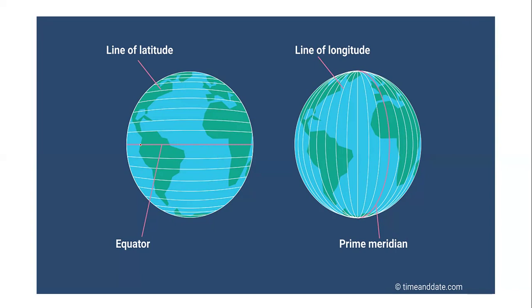So, equator is a great circle. Why? Because it divides the earth into two halves.